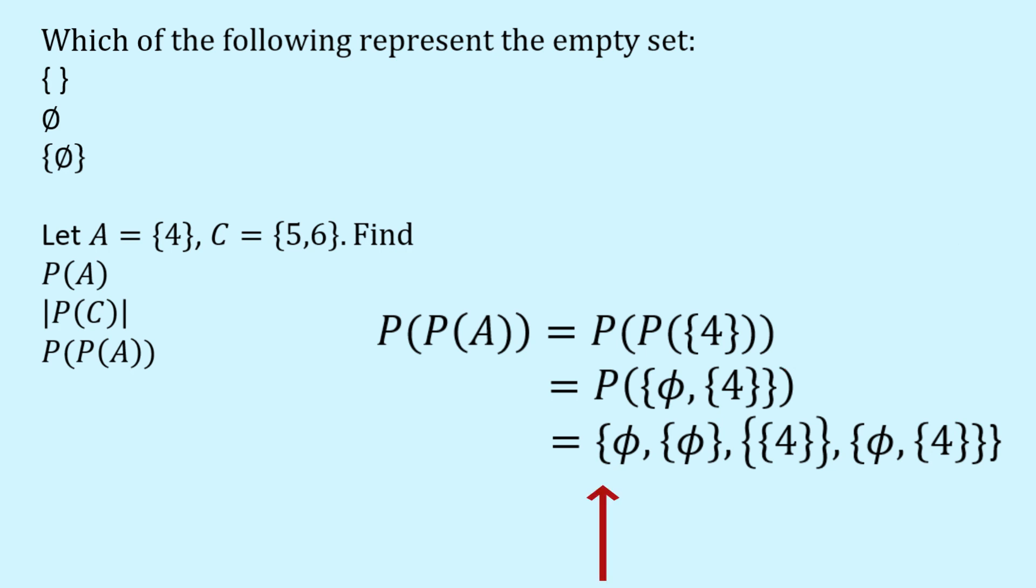So now we need to take the power set of that. So remember how we do it, it's a power set, it's a set, so we need to put the curly brackets on the outside. And now we start going through making up subsets of the power set of A. So the first thing is we could have a set that's got nothing in it, and that's the empty set.